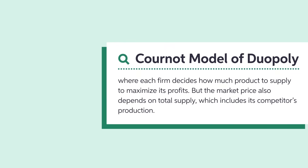There are many ways in which firms in oligopolistic markets compete or cooperate and many economic models to describe them. We'll look at three of them in more detail. In a Cournot duopoly, each firm decides how much product to supply to maximize its profits. But the market price also depends on total supply, which includes its competitor's production.